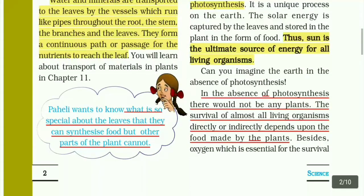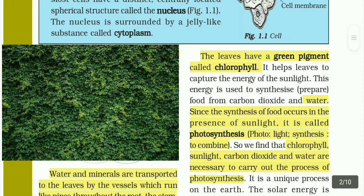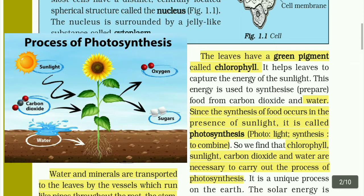Leaves can synthesize food but other parts of the plant cannot, because leaves have a green pigment called chlorophyll. Chlorophyll helps leaves capture the energy of sunlight. This energy is used to synthesize food from carbon dioxide and water. Since the synthesis of food occurs in the presence of sunlight, it is called photosynthesis.